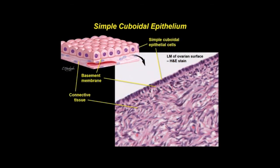Consisting of one-layer cells whose height roughly equals their width, simple cuboidal epithelium is found lining the ovarian surface, interrenal tubules, thyroid follicles, exocrine glands, and parts of the eye. This epithelium is typically specialized for ion transport or secretion, and apical cell surfaces often have microvilli.